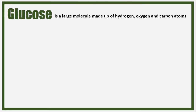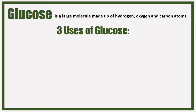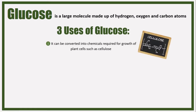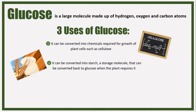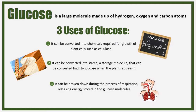Glucose is a large molecule made up of hydrogen, oxygen, and carbon atoms. There are three uses of glucose in plants. First, glucose is converted into chemicals required for growth and rigidity of plant cells, such as cellulose. Second, it's converted into starch, which is a storage molecule - the plant converts excess glucose into starch and converts it back when needed. Third, glucose is broken down during the process of respiration.